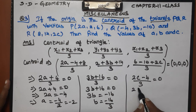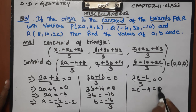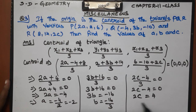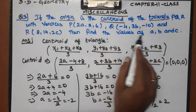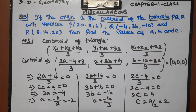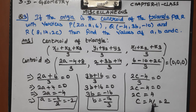So 2c minus 4 equals 0. We have to find the values. So the value of c: 2c minus 4 equals 0, so c equals 2. The values of a, b, c are: a = minus 2, b = minus 4, c = 2. This is the required answer.